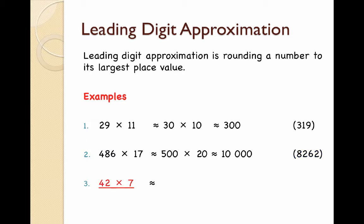Finally, let's look at 42 times 7. Again, I'm going to round 42 to the nearest 10, that gives me 40, and 7 to the nearest unit. The nearest unit is still 7, so I'm going to do 40 times 7. Again, this is a lot easier than 42 times 7. So 4 times 7 is 28, and then the zero from the 40 needs to go on the end. So my final answer is 280, the exact answer being 294.